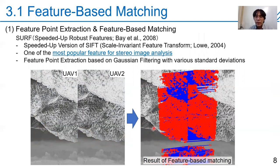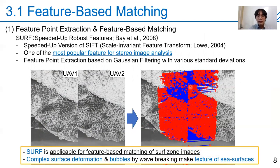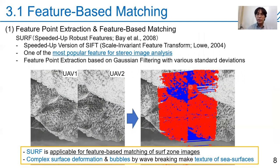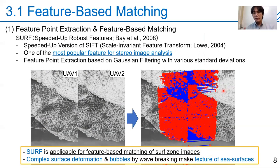The result of feature-based matching shows blue lines connecting the matching points. From this result, I think SURF is applicable for feature-based matching of surf zone images. However, we need the complex surface deformation and bubbles from breaking waves, as they create textures on the sea surfaces that are required for feature point extraction and matching. So currently this technique is only applicable for surf zone images.